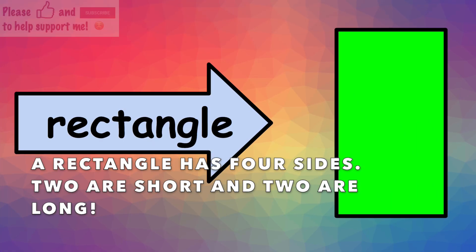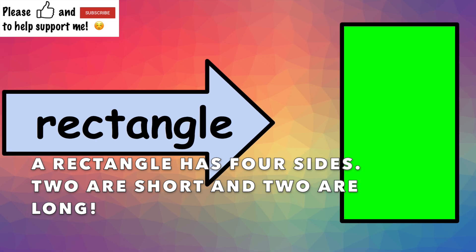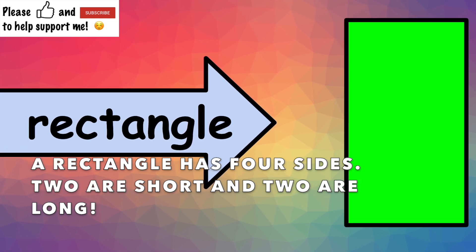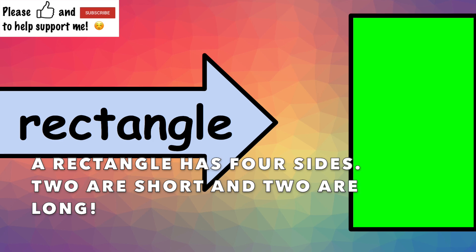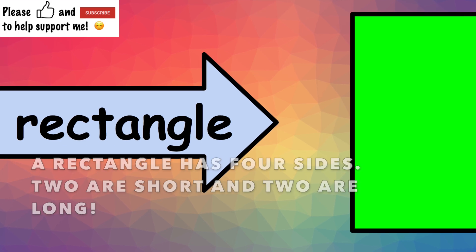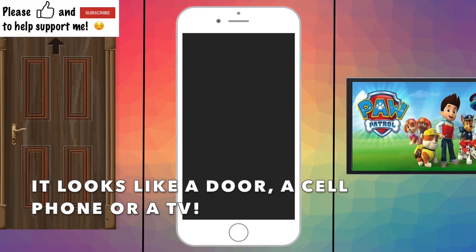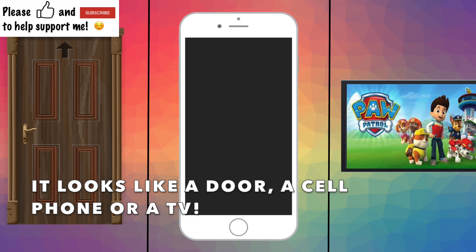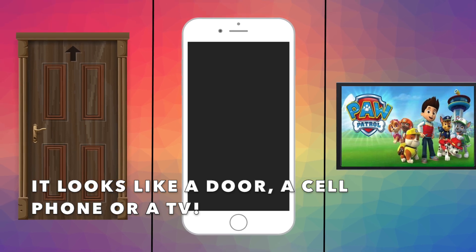A rectangle has 4 sides. 2 are short and 2 are long. It looks like a door, a cell phone, or a TV.